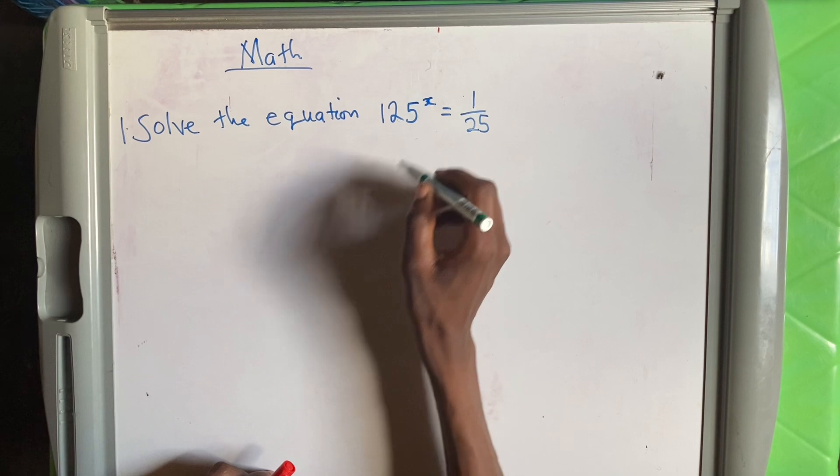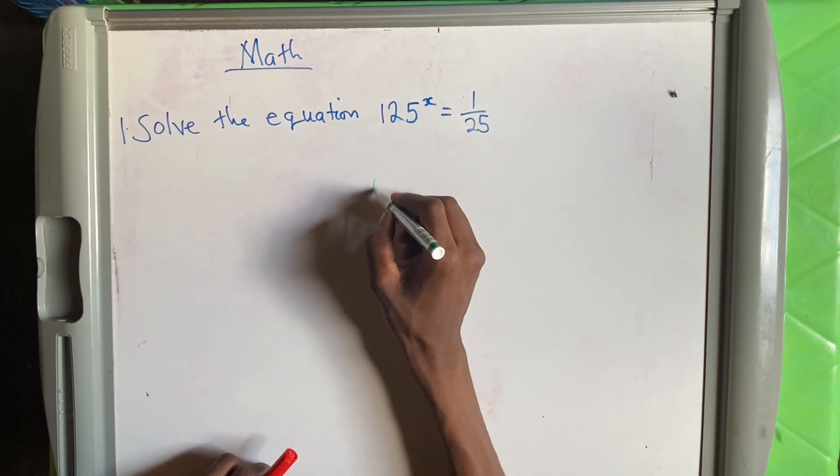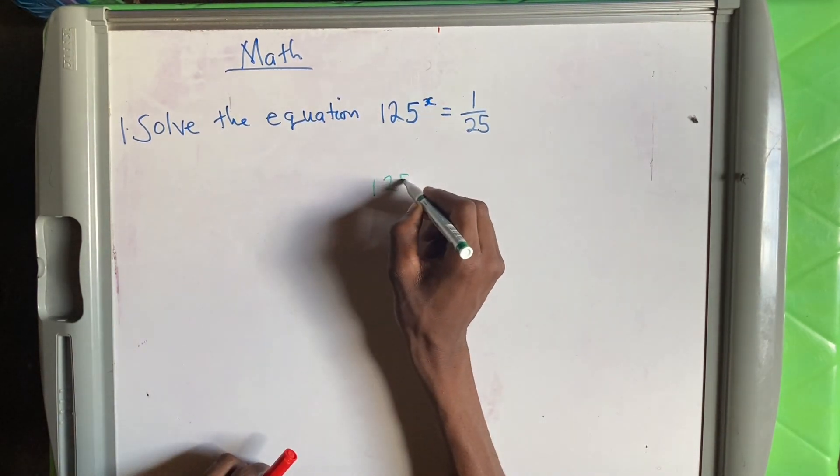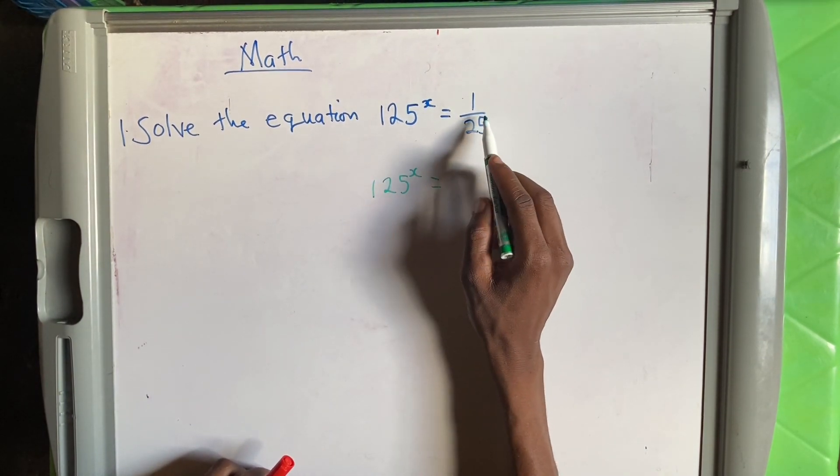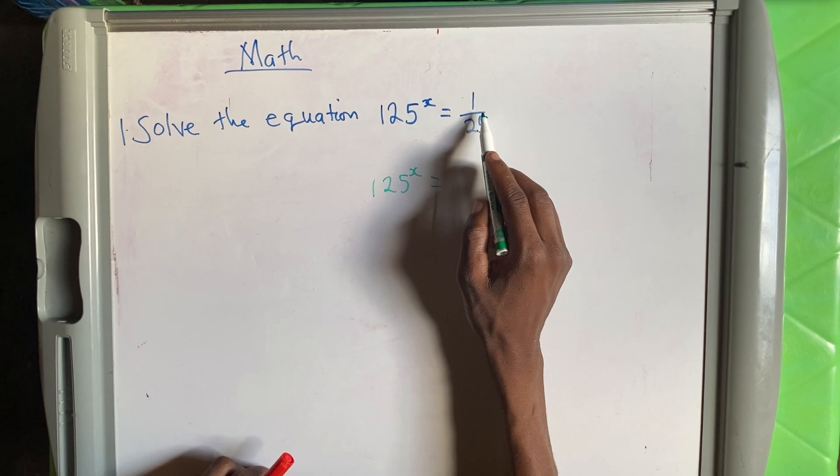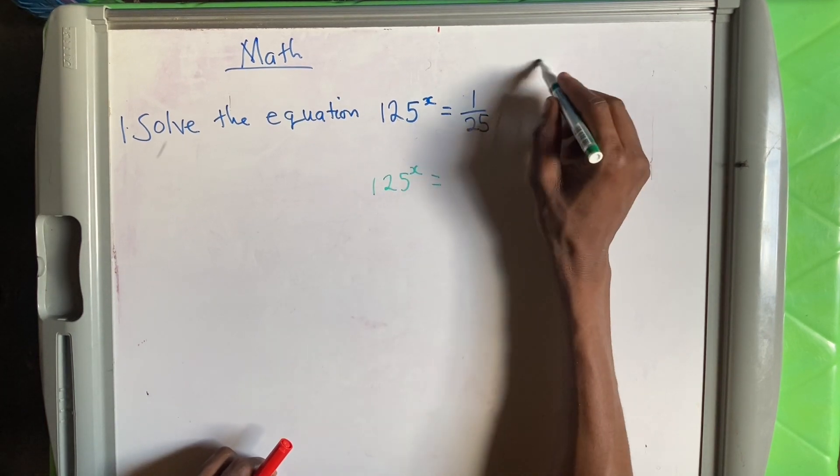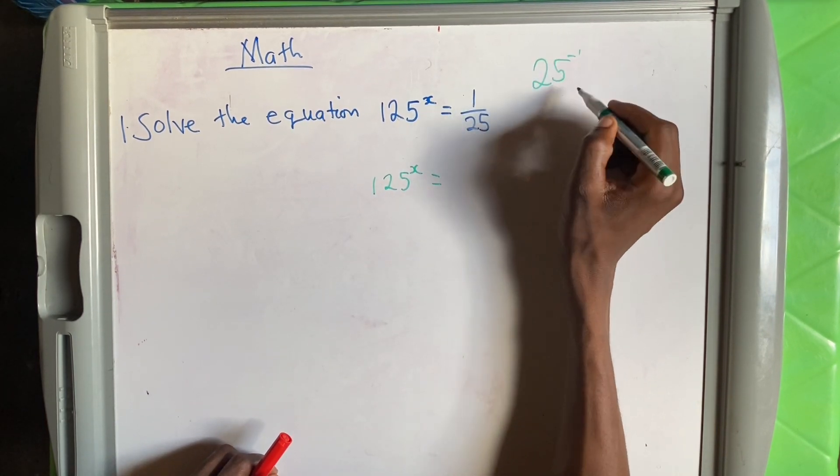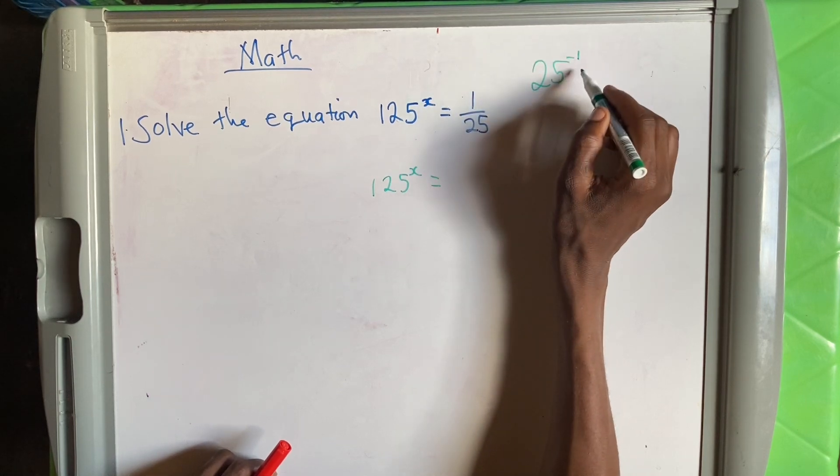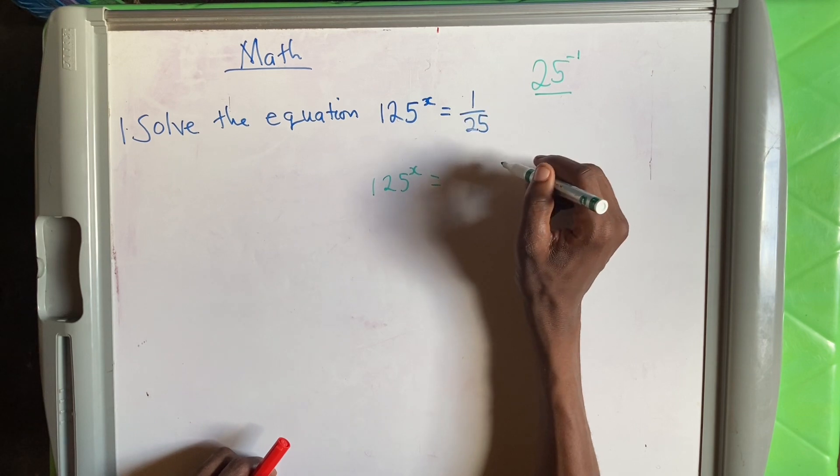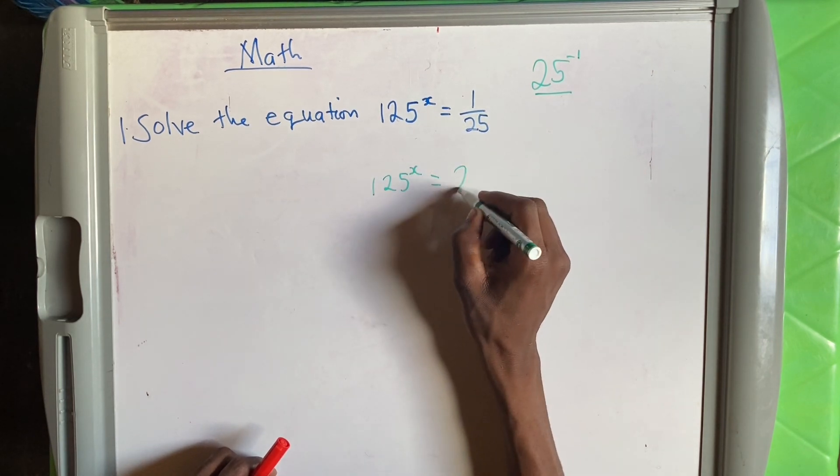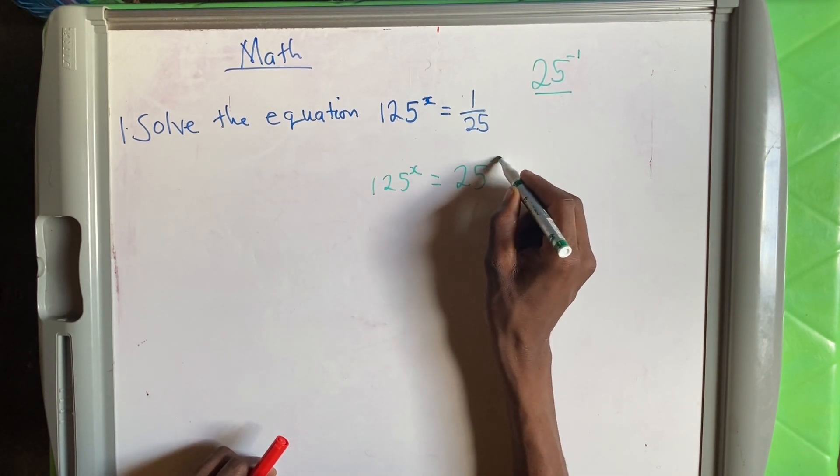So we first have to change this part. We have 125 to the power x which is equal to... Now, this part has to be reversed. This is the inverse of 25 to the power negative 1 where you divide by 1 to remove the negative. So you have to write it in that format to remove this one which is on top. So we have 25 to the power negative 1.